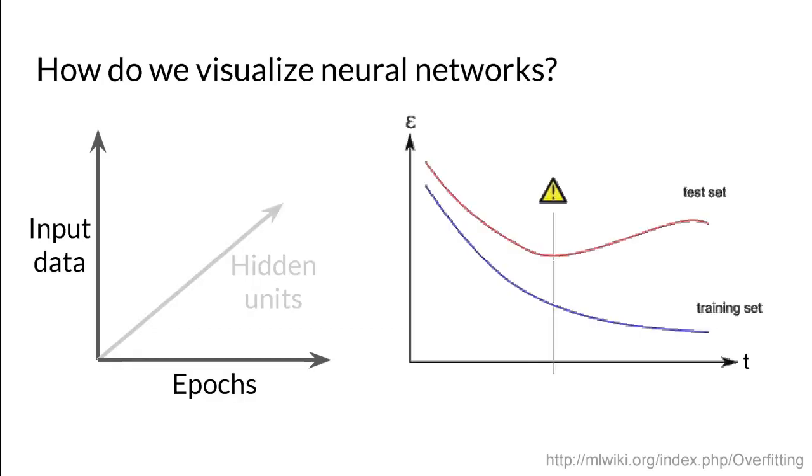The first thing we do when visualizing a neural network is typically to visualize the loss curve. However, this gives only a global view, without telling us anything about the behavior of the hidden layers.